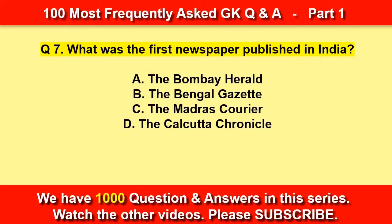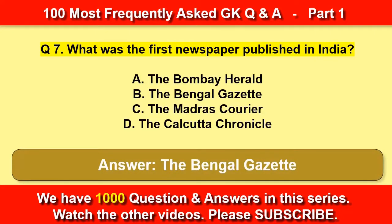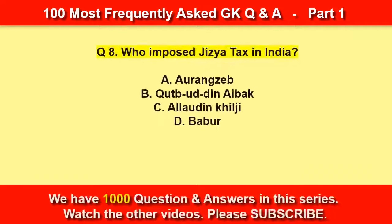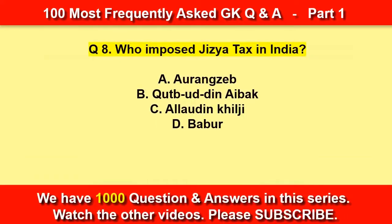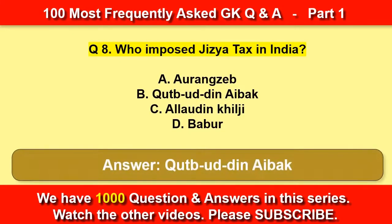What was the first newspaper published in India? The Bengal Gazette. Who introduced the jagir system in India? Qutubuddin Aibak.